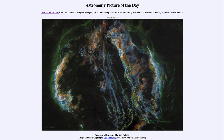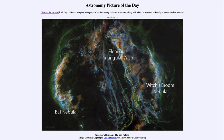It's such a large nebula that it's actually known by multiple names in different parts of it. We can label a couple of those — to the left-hand side we see the Bat Nebula, and to the upper center we see Fleming's Triangular Wisp.